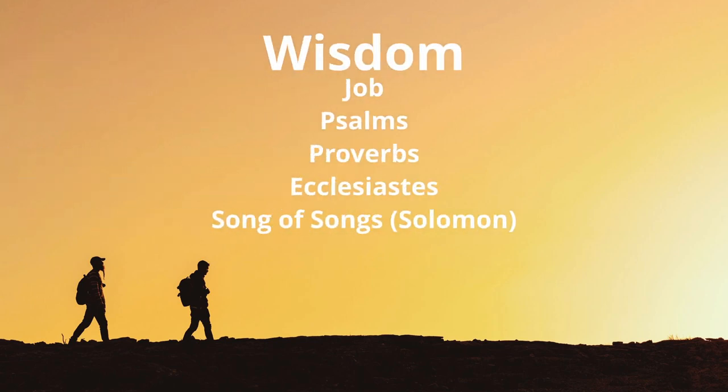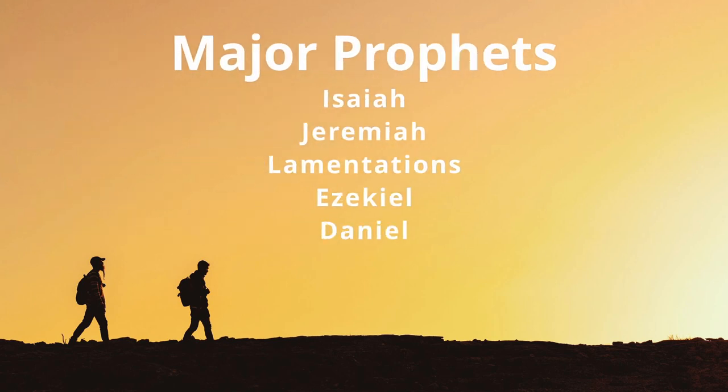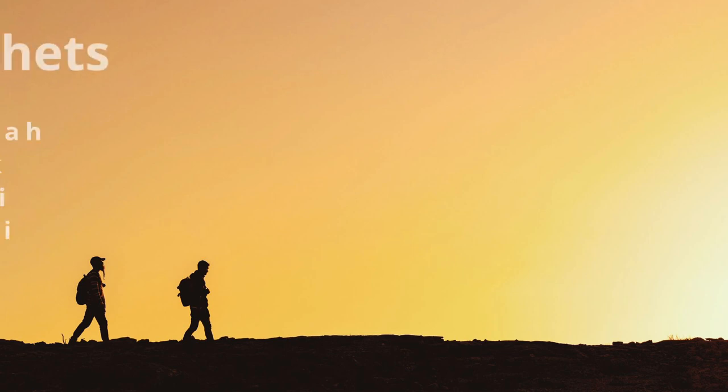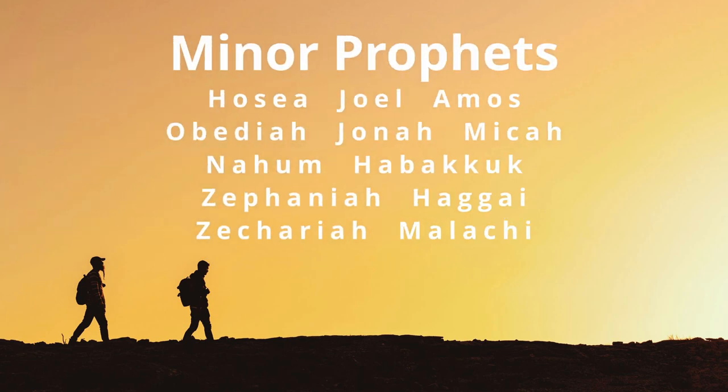From Job to Song of Songs is the Wisdom Literature, or poetry. Psalms is probably something you're familiar with, so you would label all of that with a bracket: Wisdom Literature. From Isaiah all the way to Malachi — that's a big section — that's the Prophets. You can subdivide this: Isaiah, Jeremiah, Lamentations, Ezekiel, and Daniel are the Major Prophets, which doesn't mean they're better, just that they're bigger books. The rest are Minor Prophets. That's pretty much the Old Testament in our current Christian Bibles.